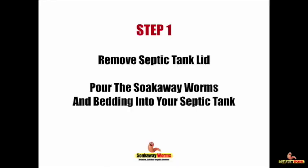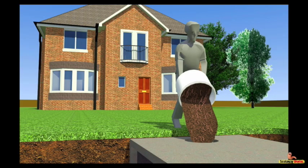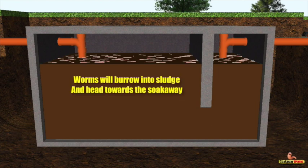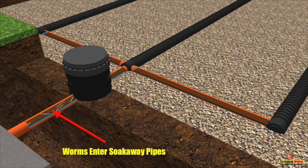Soak away worms are also very easy to install and get into your septic tank or soak away system. Step one: remove the septic tank lid and then pour the worms and bedding into your septic tank or the nearest manhole chamber. Once the worms are in the septic tank, they will then start to breed and multiply, burrowing into that sludge and making their way slowly towards the soak away via the outlet pipe. The worms will continue to burrow and make their way through the sludge, continuing to work their way through those soak away pipes.